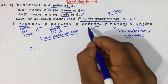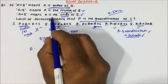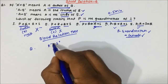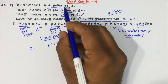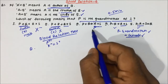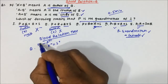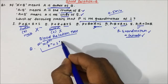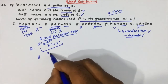Now we will use the blood relation tree for the remaining three options. Option three: p × q + r × s. Starting from the right: r × s means r is wife of s, so r is female and s is male. Then q + r means q is father of r. Then p × q means p is wife of q. So in the question they ask if p is grandmother of s — but here p is actually mother of s, so option three is rejected.